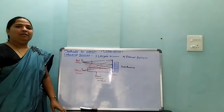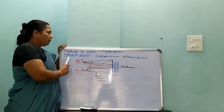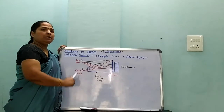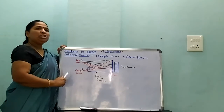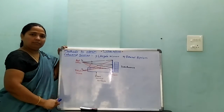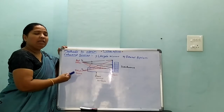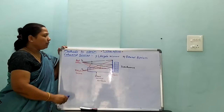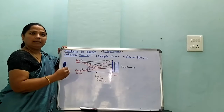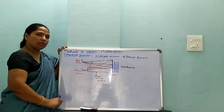Hello students, today we learn about methods to obtain coherent sources. Coherent sources means sources which emit light waves having the same phase — the two waves produced by those sources have the same phase. Therefore, their phase difference is constant. Then those sources are known as coherent sources.